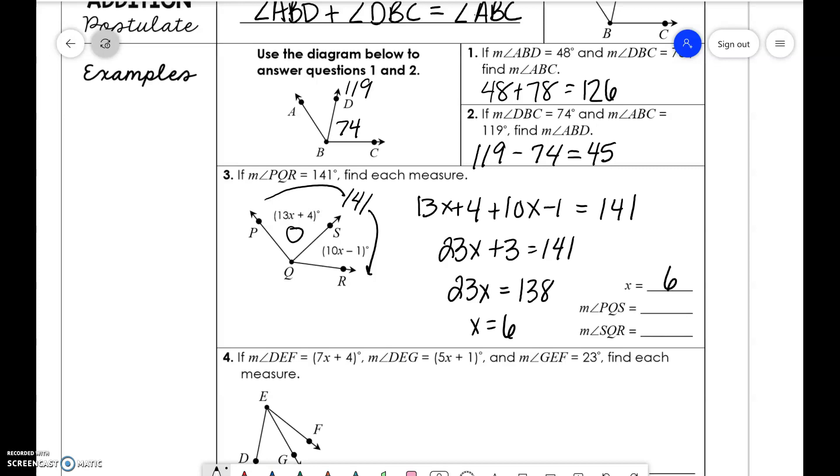Then we're just plugging x into PQS, which is 13 times 6 plus 4, which is 82. And 10 times 6 minus 1, which is 59.